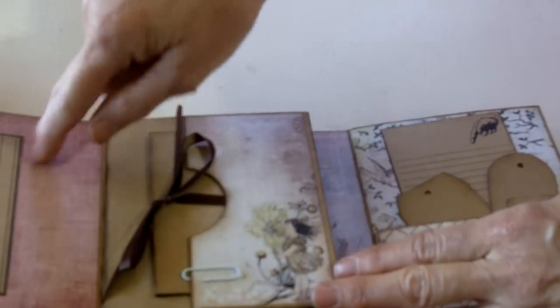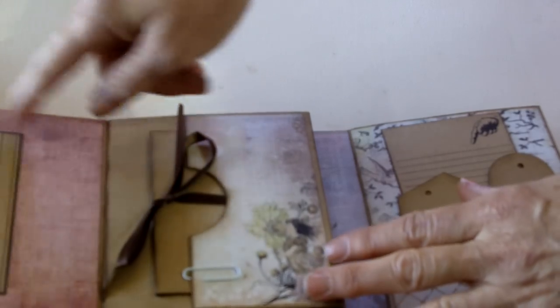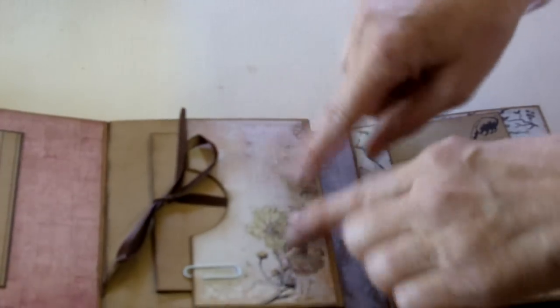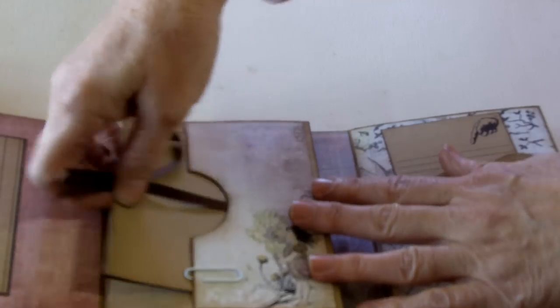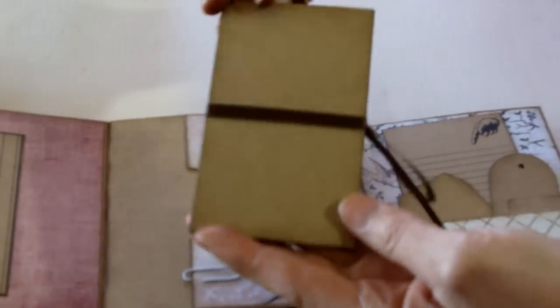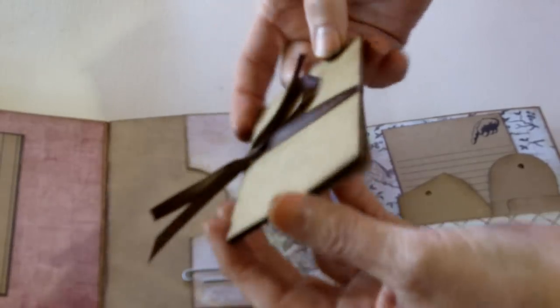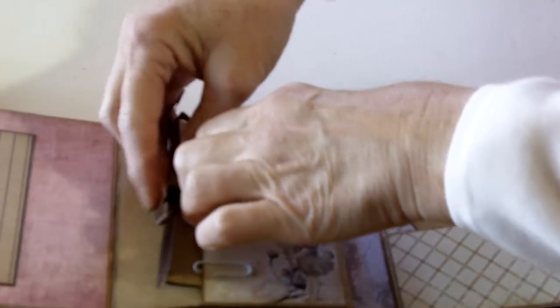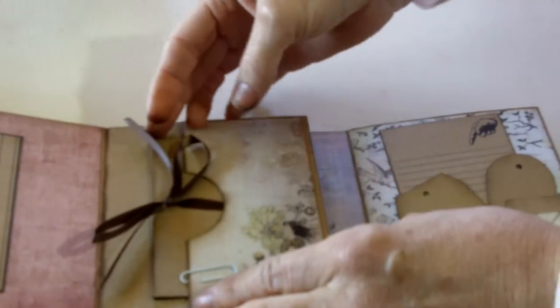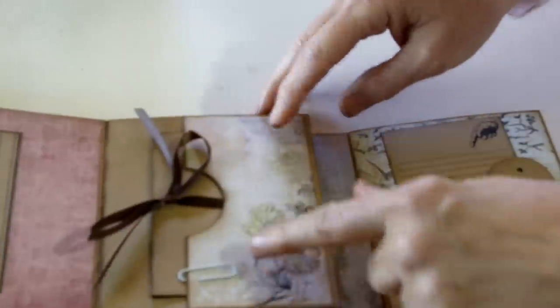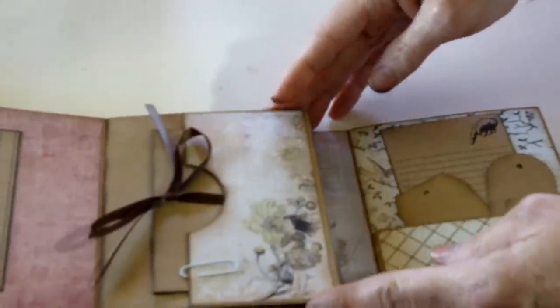This page opens up nice big photo area, journaling spots. This big pocket here, I made a little book to go inside it. It's just a little accordion fold book tied together with some ribbon, added a clippy at the end in case something could be still stuck on the outside—a little mini tag or whatever.